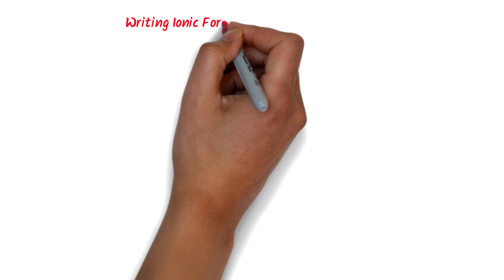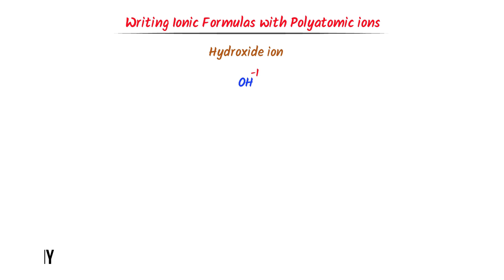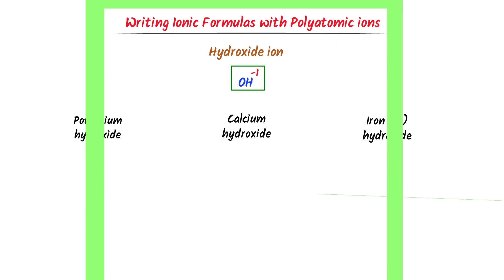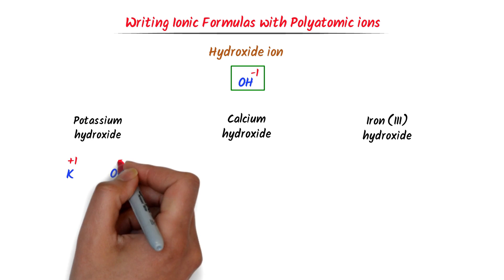Now let me teach you writing ionic formulas with polyatomic ions. Consider the hydroxide ion, which has a negative 1 charge. There is one oxygen and one hydrogen in this hydroxide ion. For potassium hydroxide, potassium is in group 1 with oxidation state positive 1, and the charge on the hydroxide ion is negative 1.